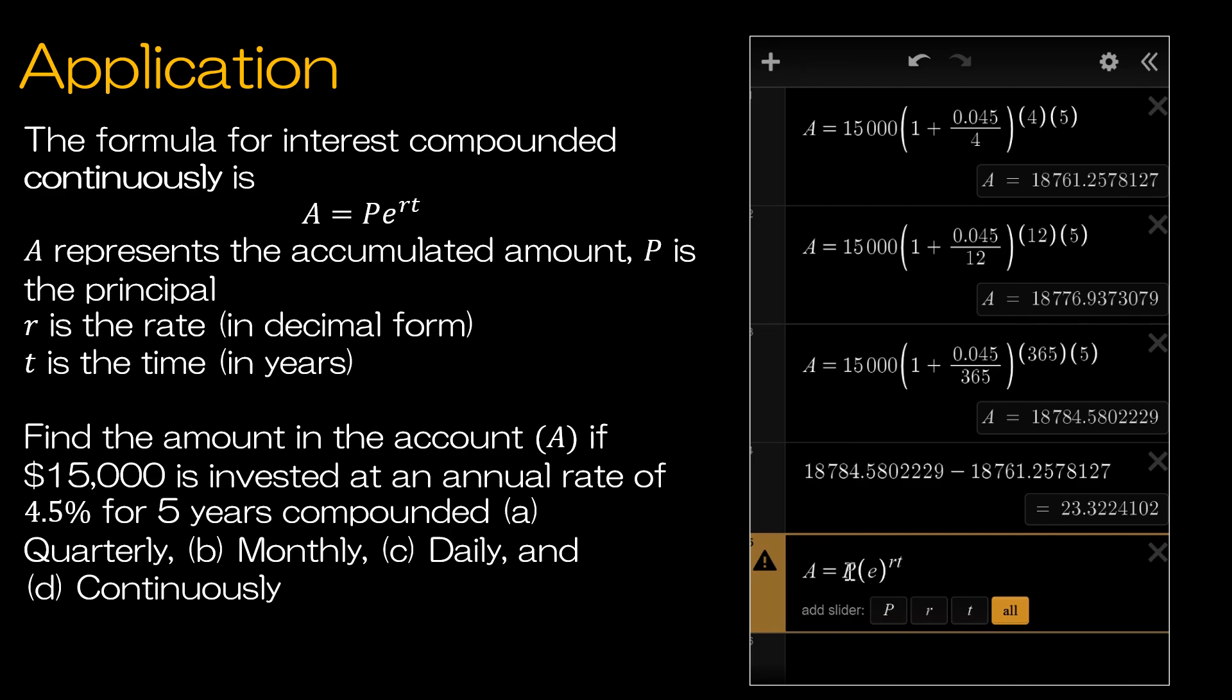Now instead of P, just as I did before, I'm going to replace P with $15,000. That's how much money I'm investing. e is e, the irrational number. R is my rate. So as I did before, 0.045, not 4.5, but 0.045, and then a time of five years.